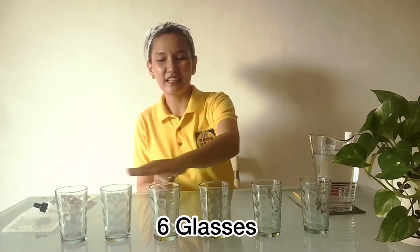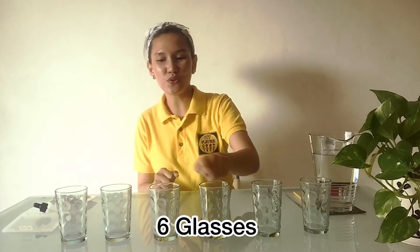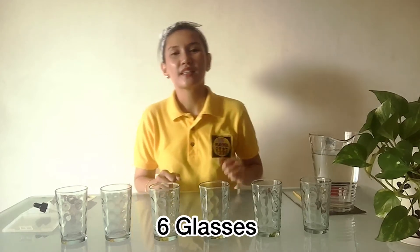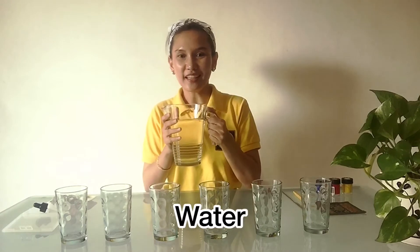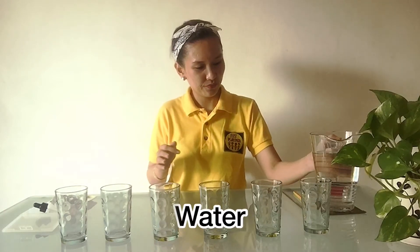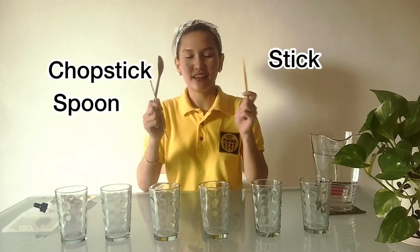Now, things that we need are glasses. Six glasses. One, two, three, four, five, six. Six glasses. And we need water. And we need a spoon, chopstick, and stick. All these you can take from your kitchen.